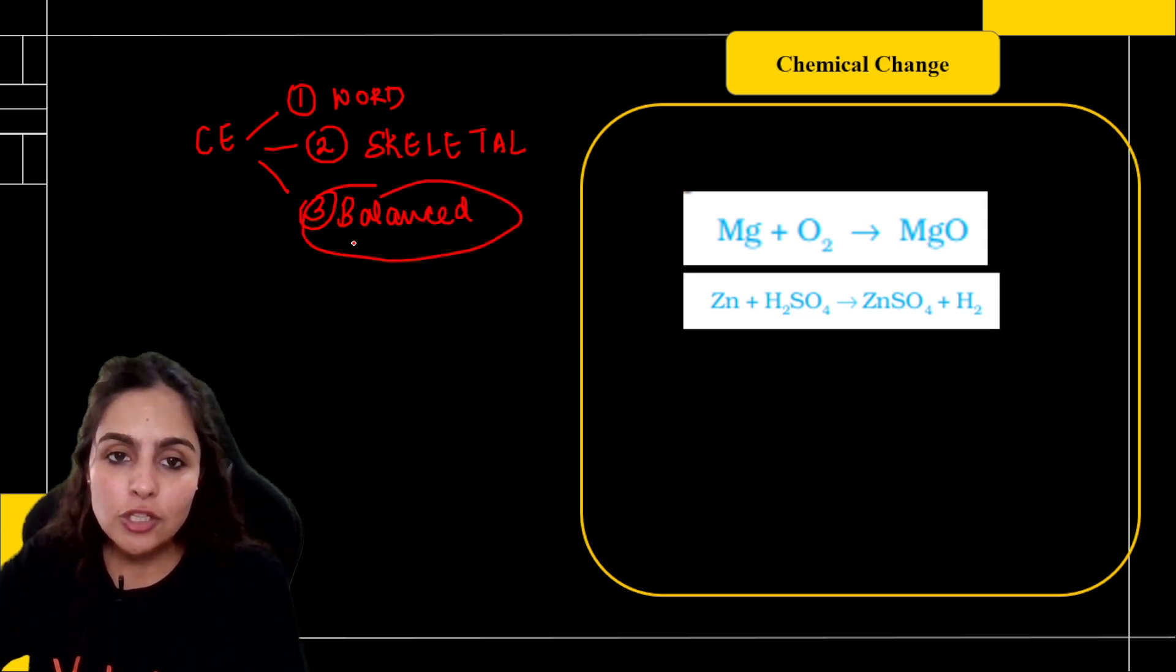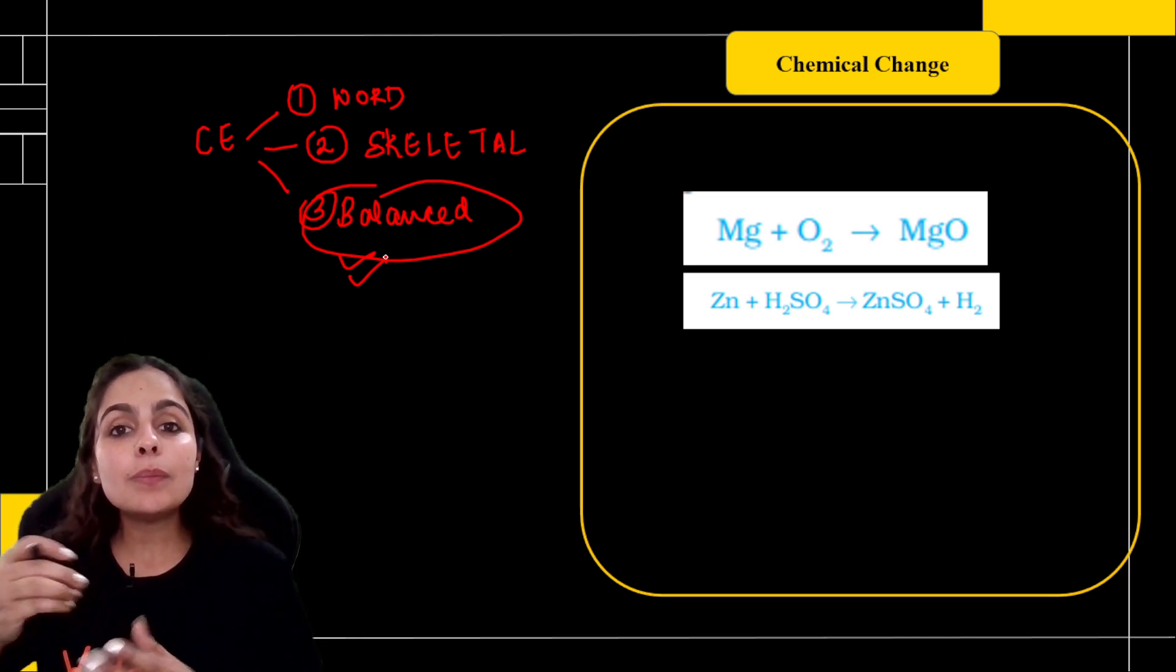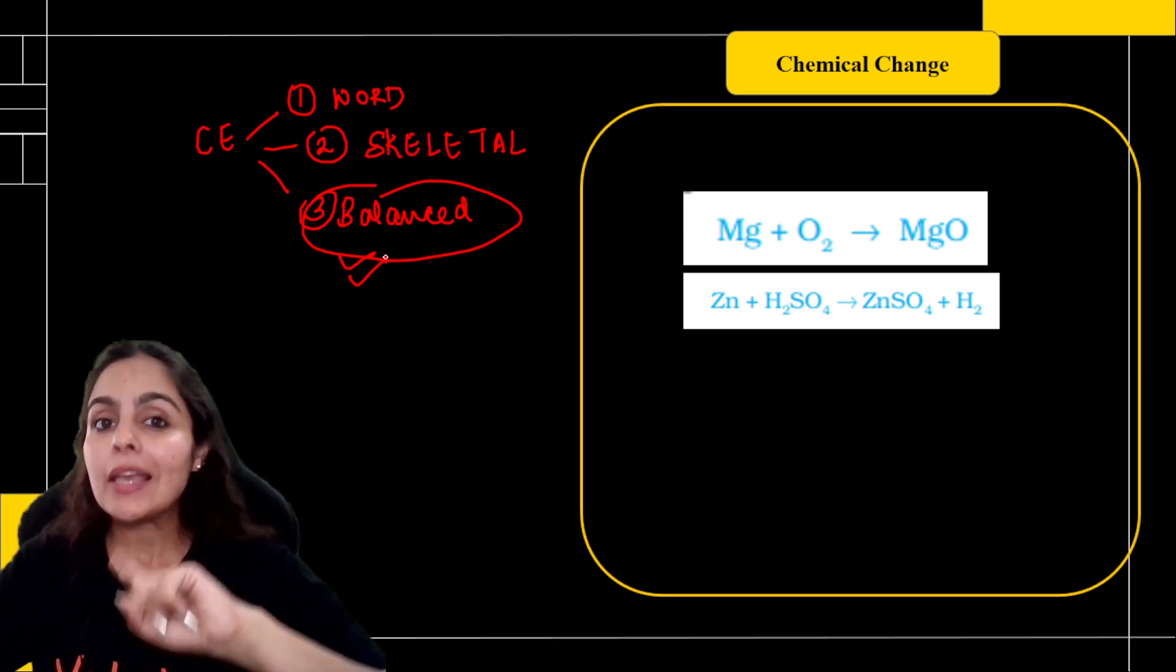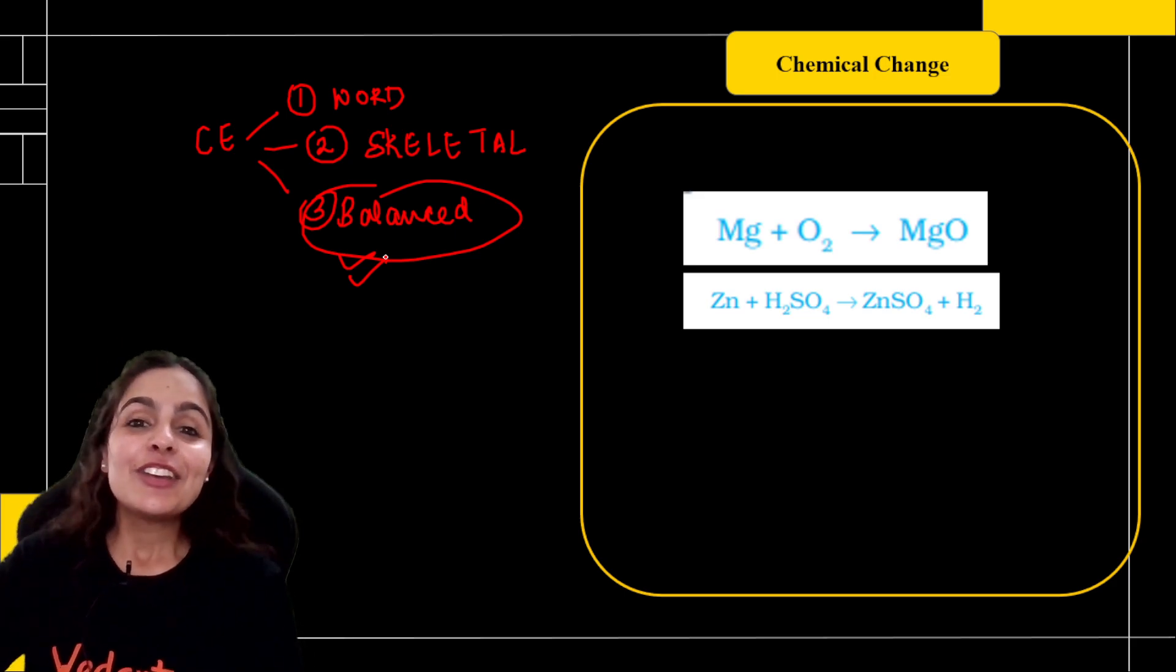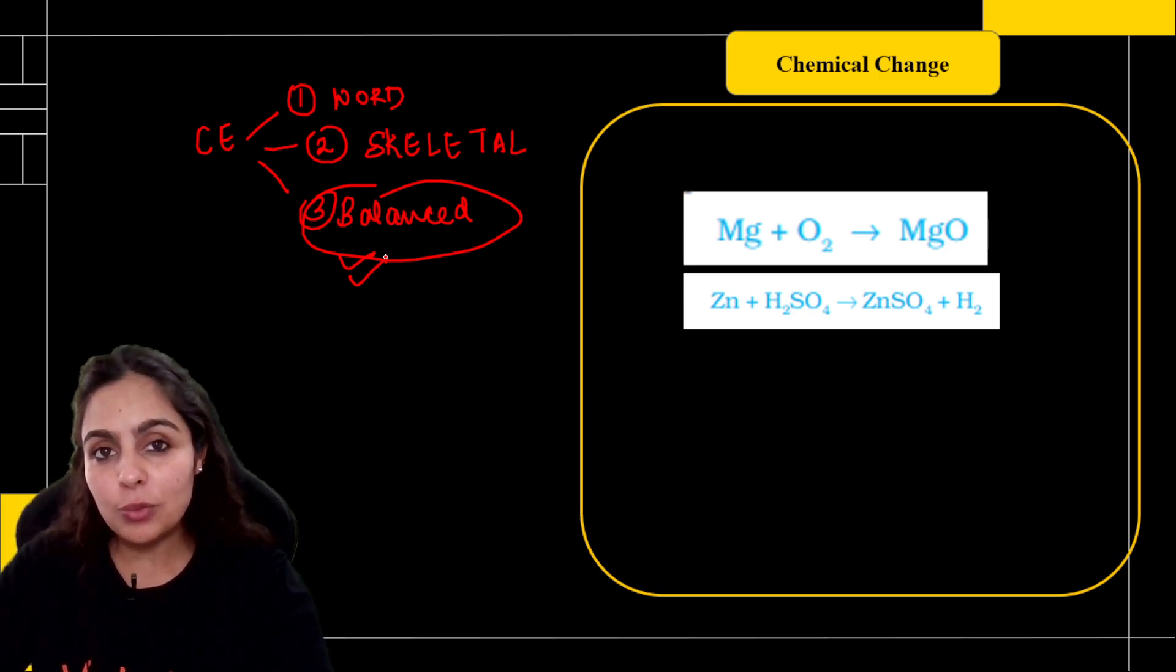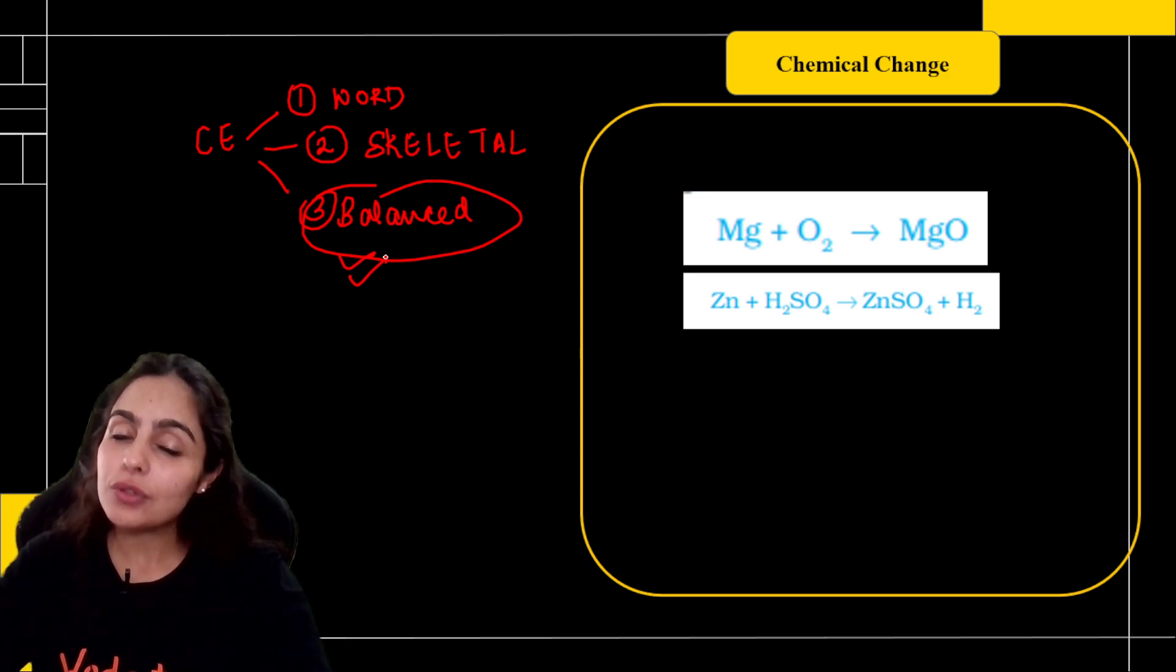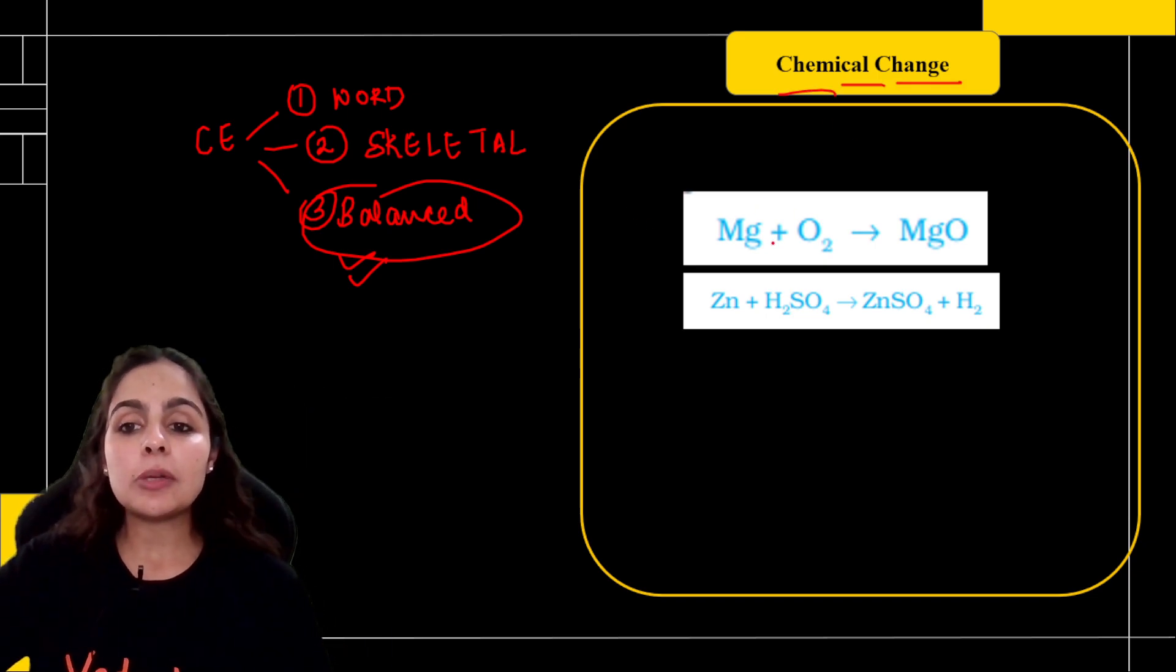Third is balanced chemical equation. Now, when we write equations in the exam, we have to balance. Why? Because if you don't do balancing, it means you are disobeying the law of conservation of mass. If you don't do this in the answer, it's very obvious that you don't get all the marks.